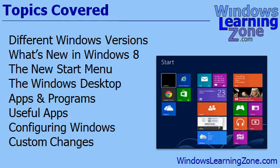In today's class, we're going to get you started working with Windows 8. We're going to talk about the different Windows versions and learn about what's new in Windows 8. We're going to cover all the changes to the menu interface including the new start menu. You'll learn how to work with tiles and live tiles and the charms bar and all the new things they've added to Windows 8. We'll spend some time with the Windows desktop and cover the differences between apps and programs — apps are new in Windows 8. We'll go over some of the useful apps included with Windows 8, show you how to download apps from the Windows Store, go through some configuration options, and I'll walk you through some of my custom changes to make Windows 8 more usable.